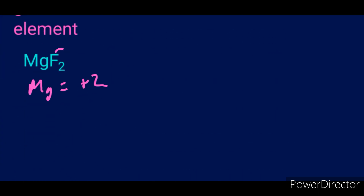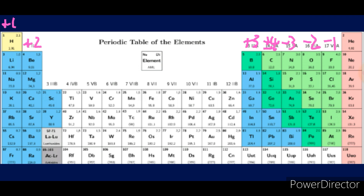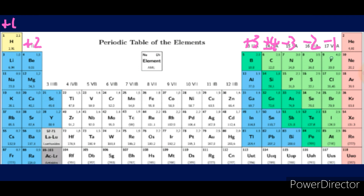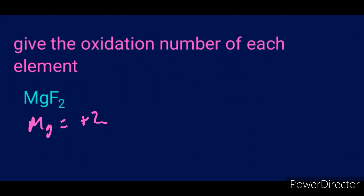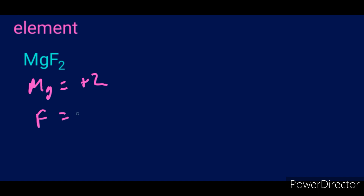Now let's find the oxidation number of fluorine. Fluorine is on the right side of the periodic table, so it's going to be −1. To verify: when there is no charge written on the compound, the total charge is zero; if there is a charge written, the total equals that charge.